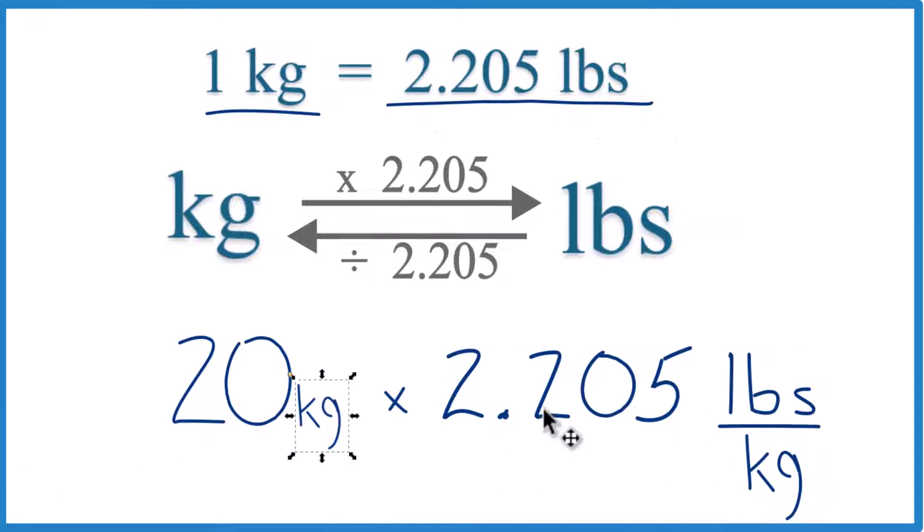And that 2.205 is 2.205 pounds in each kilogram. That's from our conversion factor up here. Because now when we multiply, kilograms on top and bottom cancel out. We're left with pounds. That's what we're looking for.